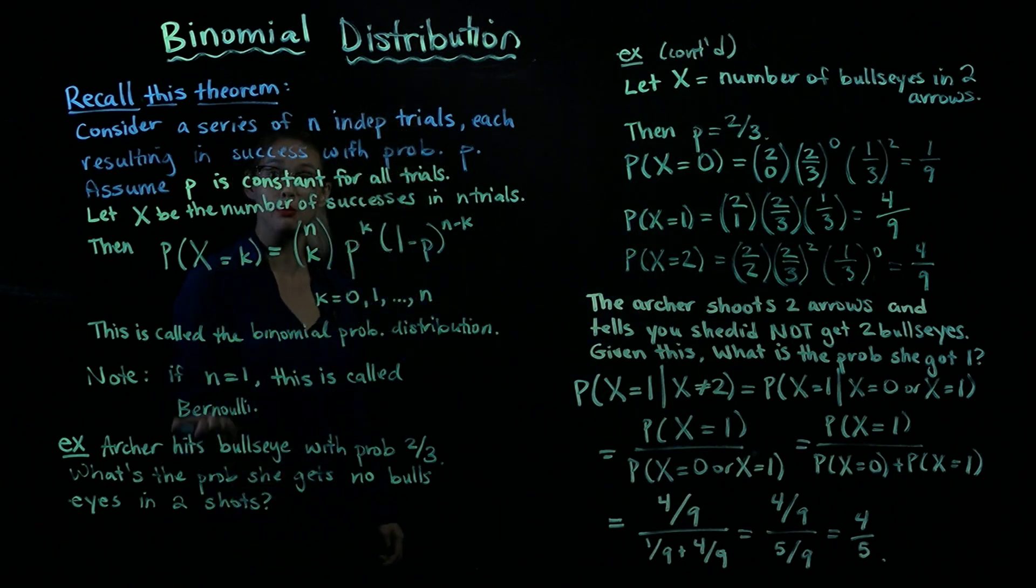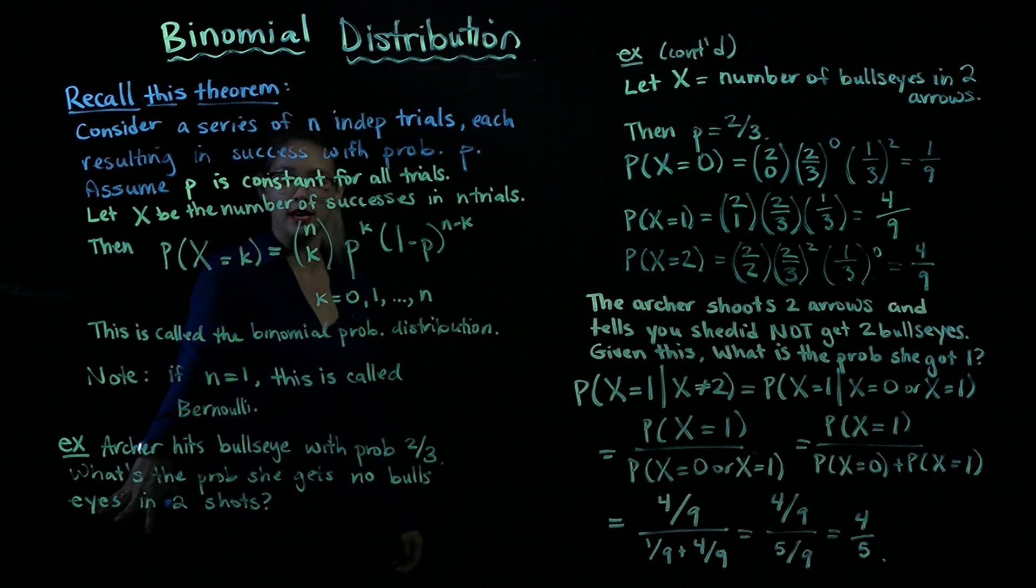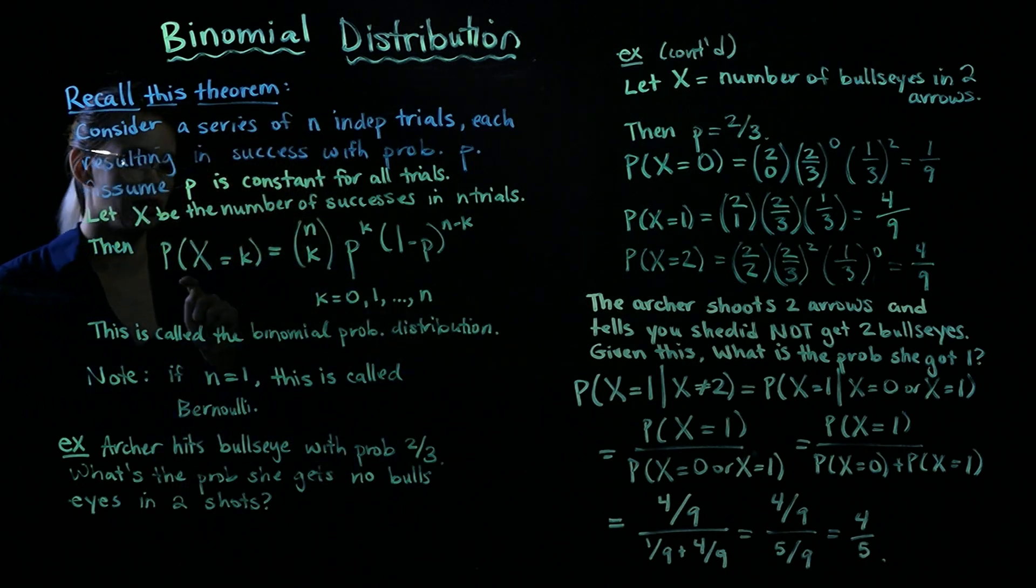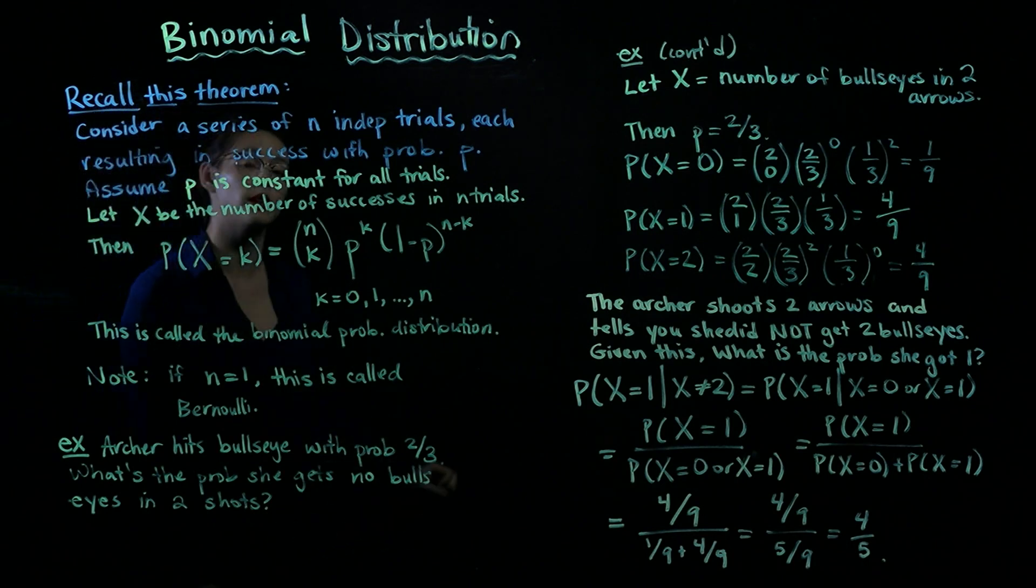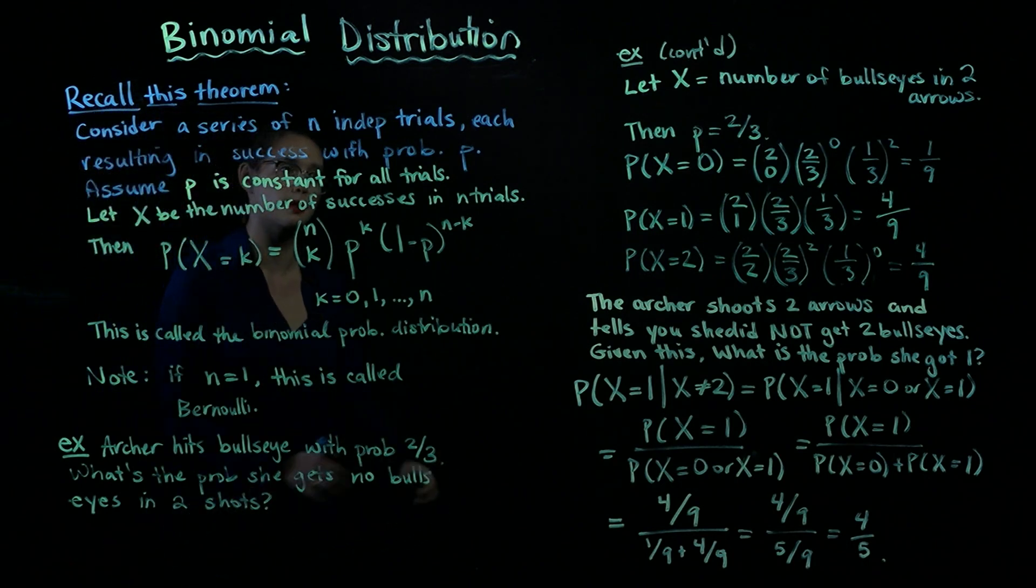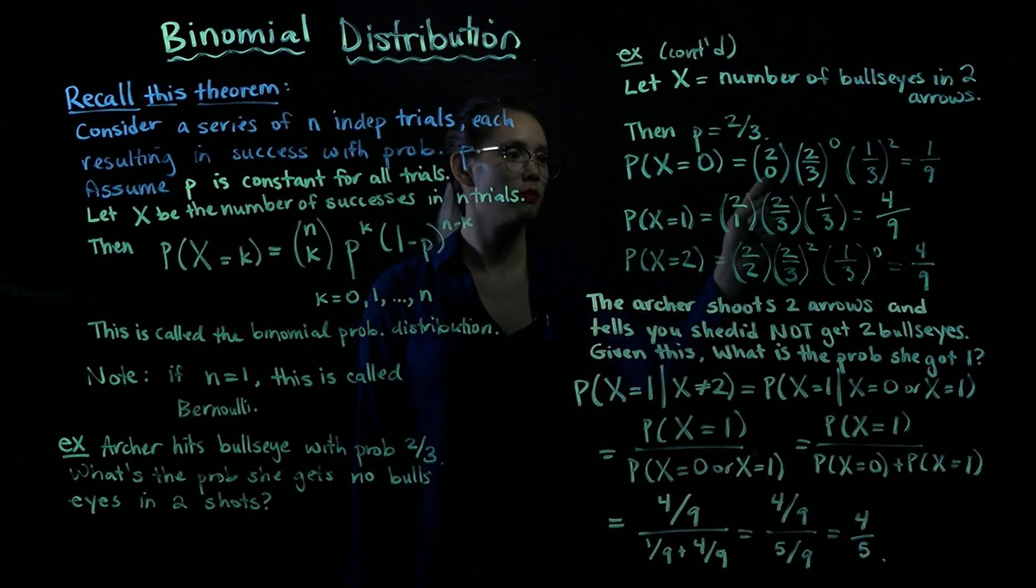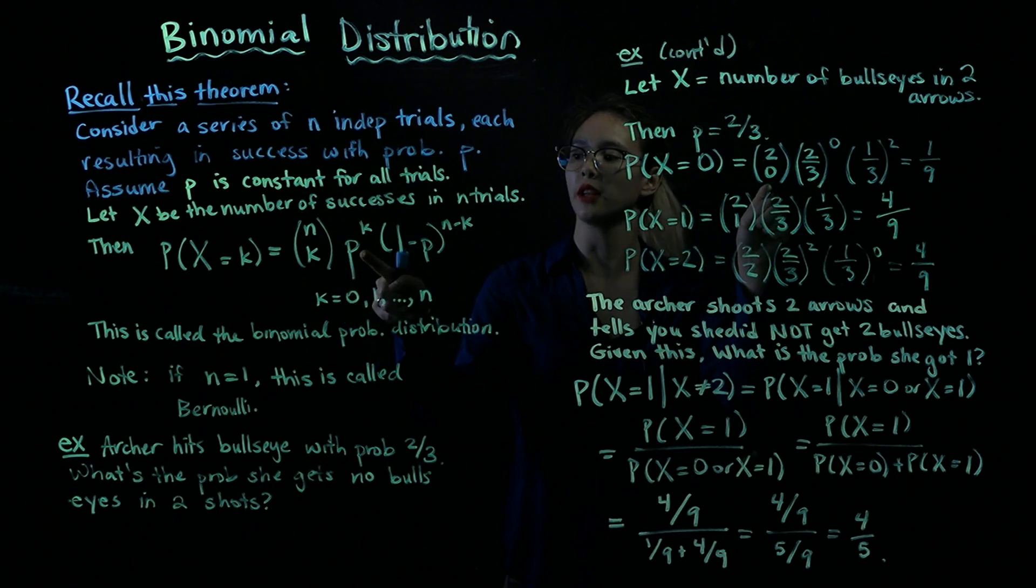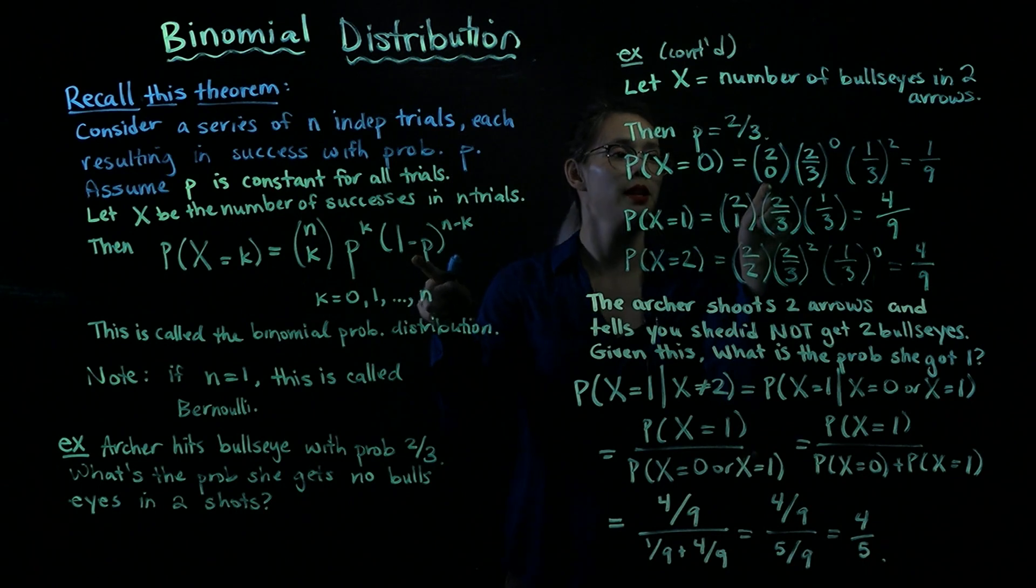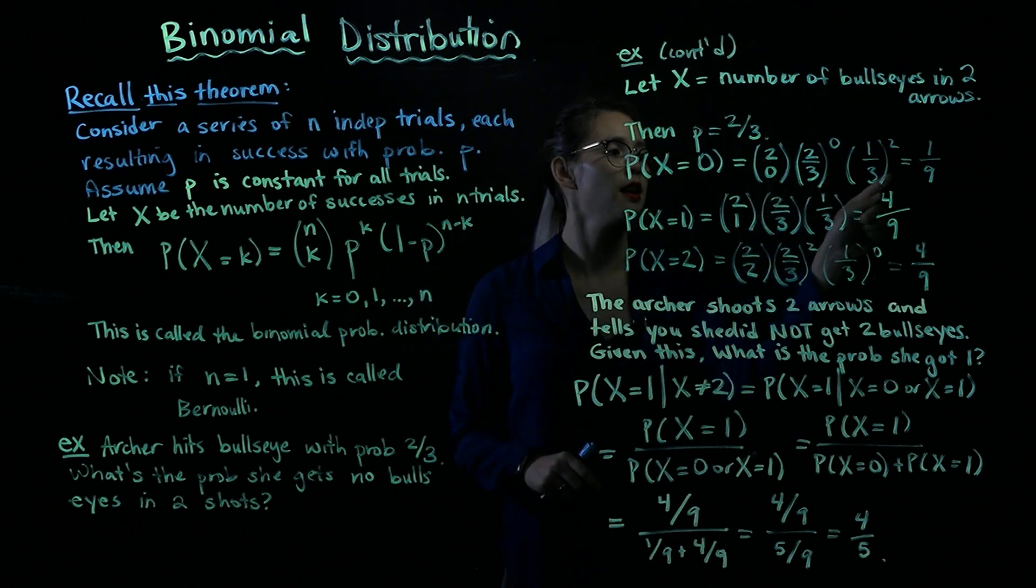All right, so let's calculate some probabilities. What's the probability that she gets no bullseyes in two shots? In other words, we're wondering, what's the probability x is equal to 0? So what we're going to do is come back here and plug in n equals 2 because she has two arrows, and k equals 0 because we're looking for the probability of zero bullseyes in two shots. We have n equals 2, k equals 0, and we're going to plug in 2 thirds for p. And that means we're plugging in 1 third for 1 minus p. So we go ahead and plug all that in, and we get 1 ninth.